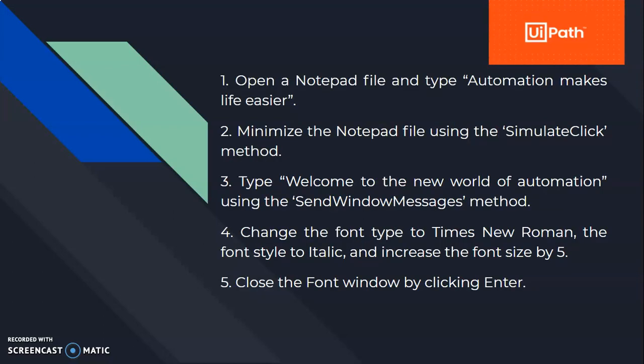Now let us understand the different tasks involved in building this workflow. The first task is to open a notepad file and type 'automation makes life easier' as the message. The second task is to minimize the notepad file using the simulate click method. The third task is to type 'welcome to the new world of automation' using the send window messages method. The fourth task is to change the font type to Times New Roman, change the font style to italic, and increase the font size by 5.